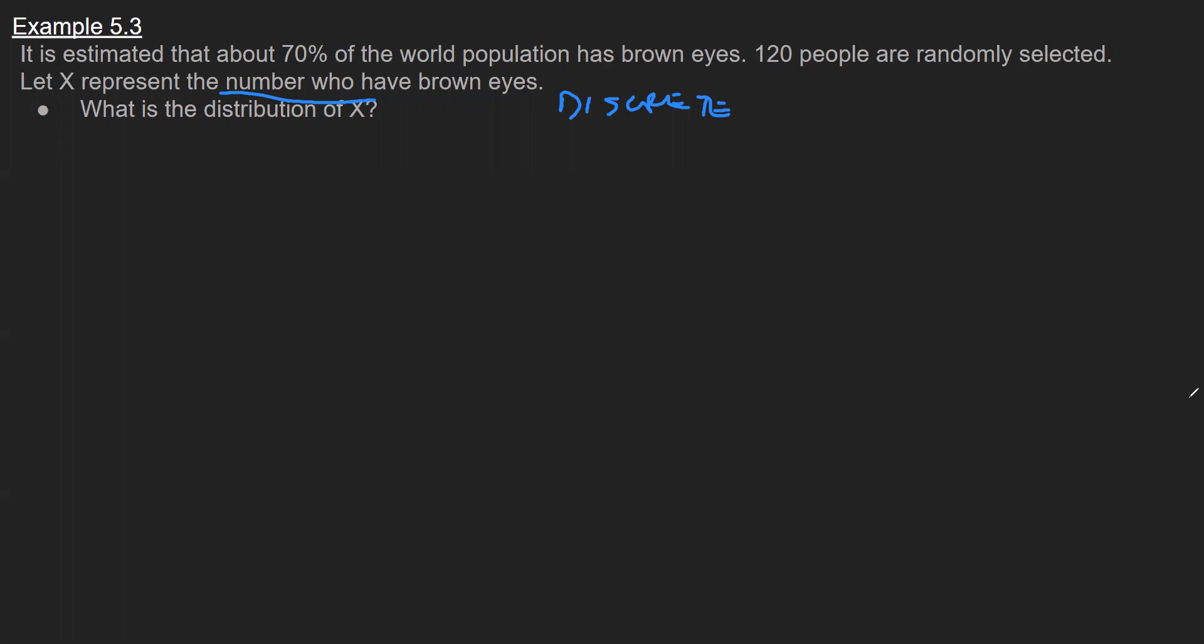We've got a fixed number of trials and that is 120. We have success versus failure, that's going to be brown eyes or not. The independence is assumed by random selection, so random implies independence.